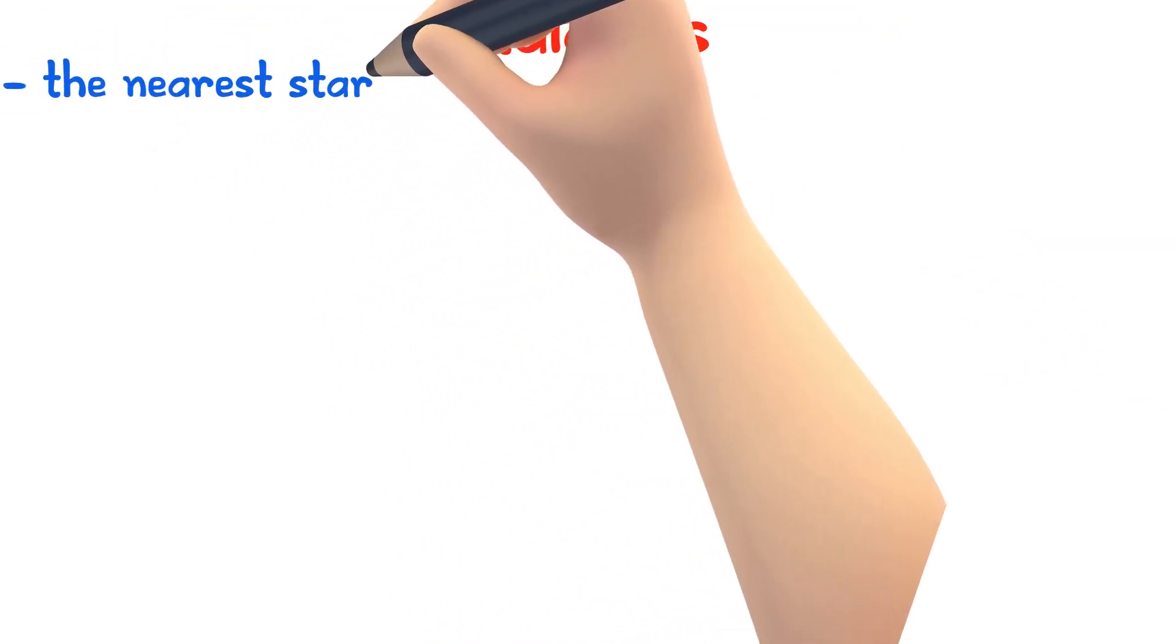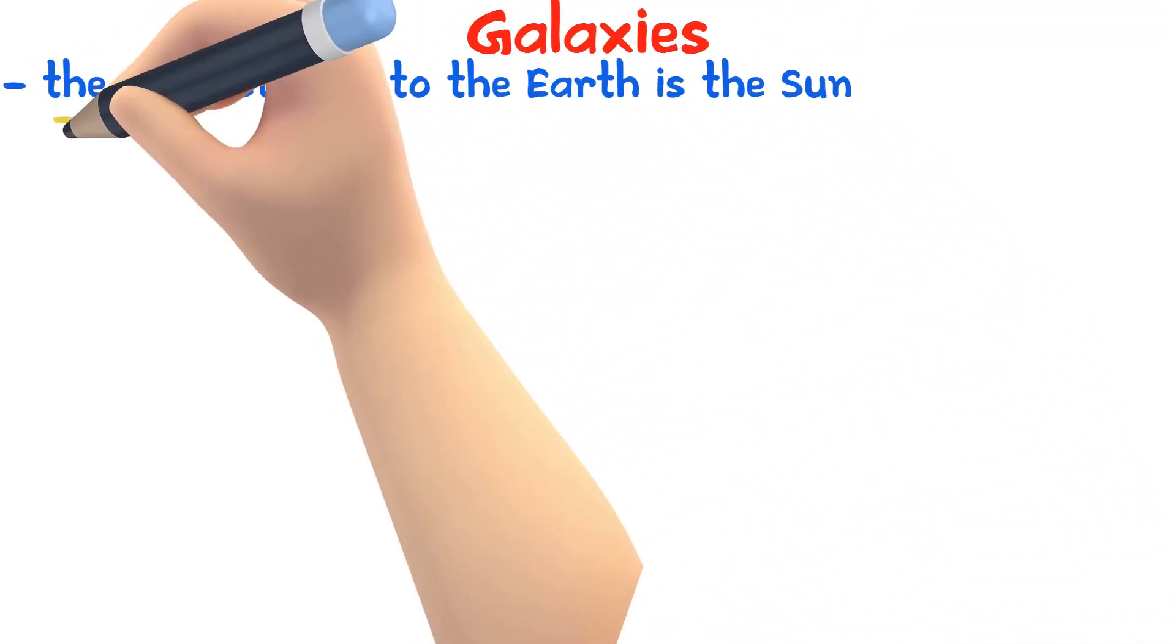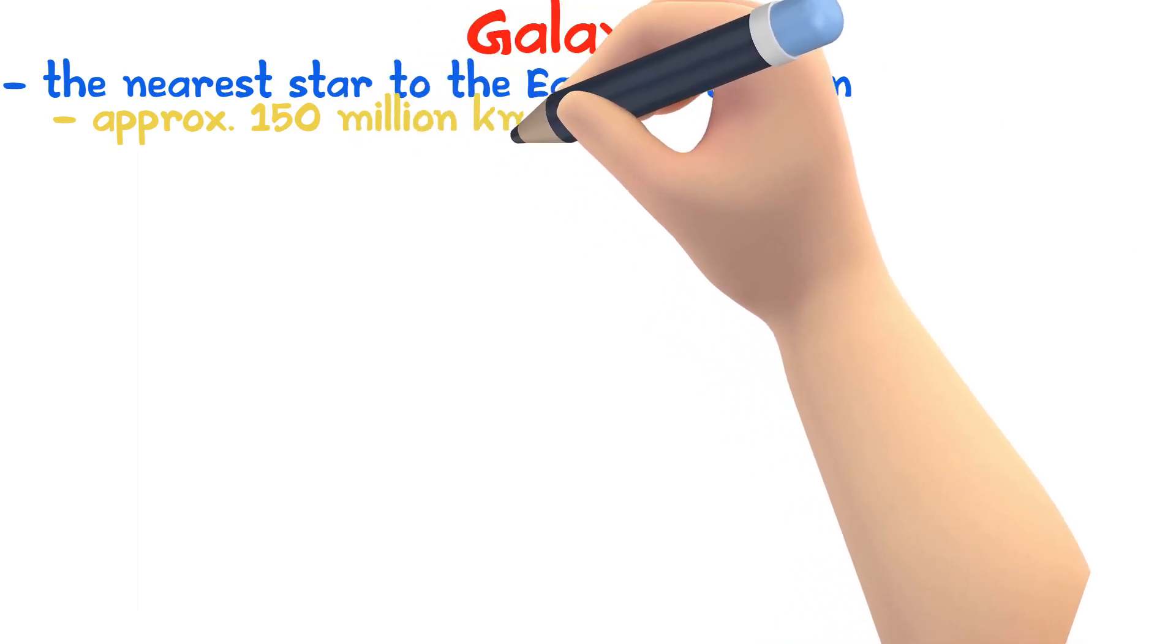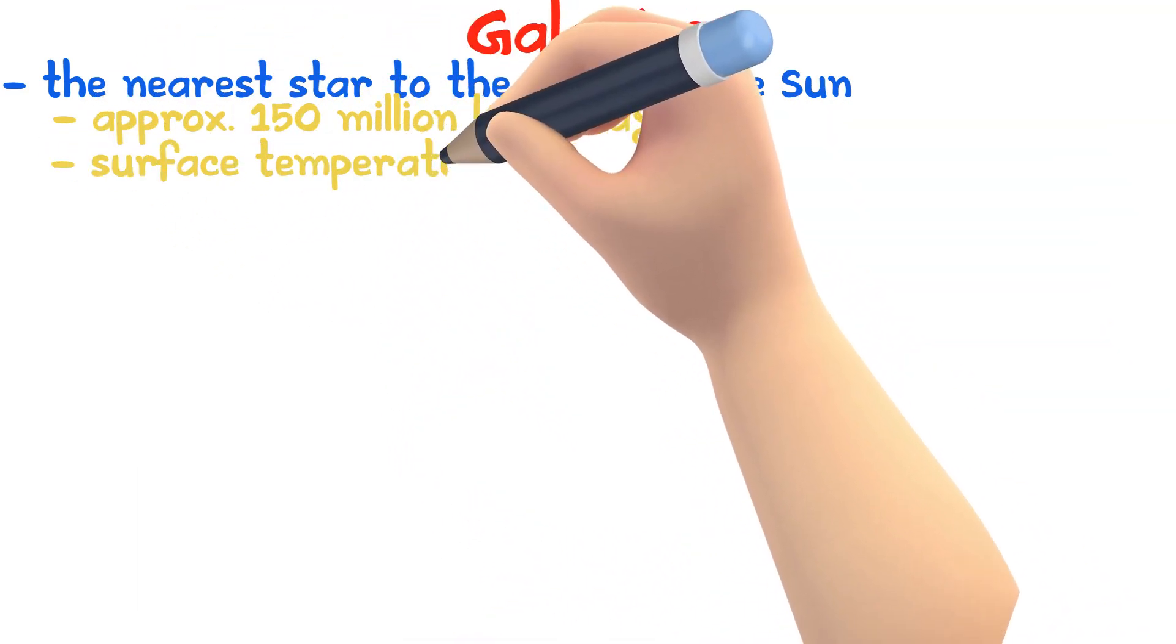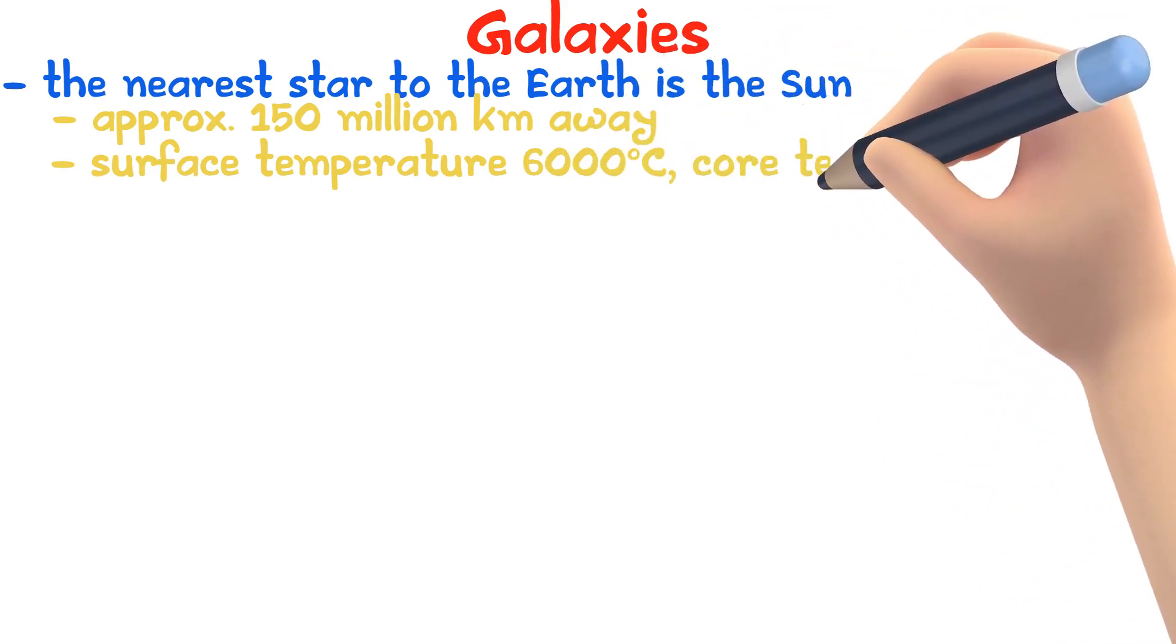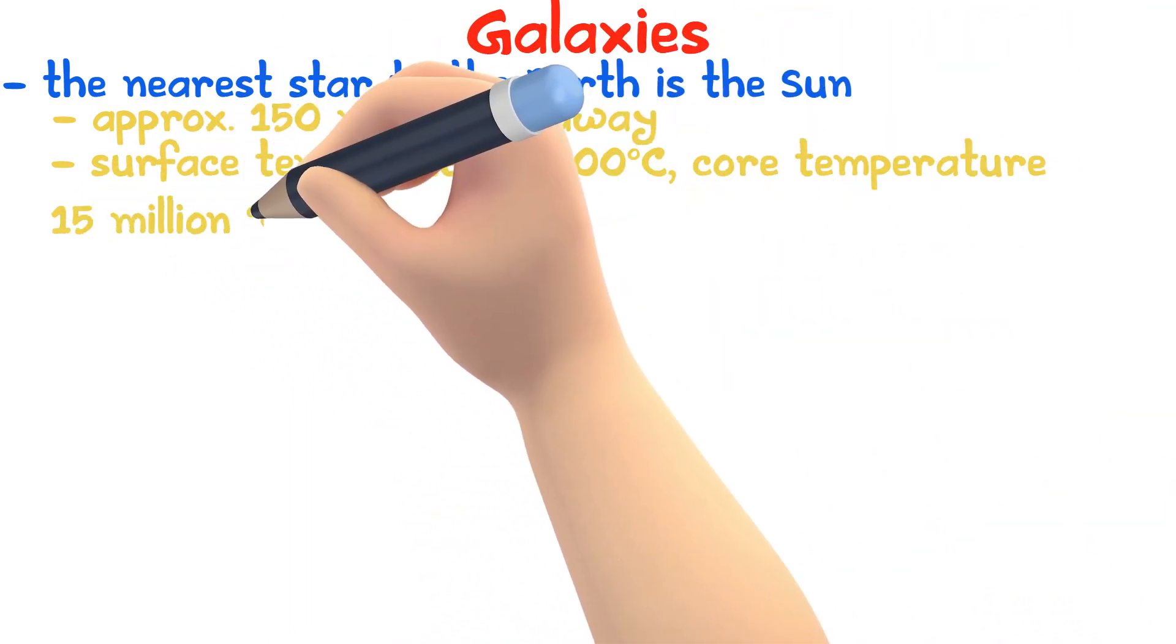The nearest star to the Earth is the Sun, approximately 150 million kilometers away. The surface temperature of the Sun is about 6000 degrees Celsius and the core temperature is about 15 million degrees Celsius.